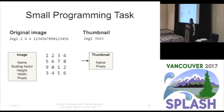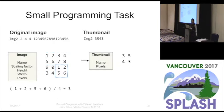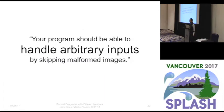The output contains the name and the list of pixels. To calculate this output, first determine the dimensions for the image — in this case, it's two rows and two columns. Then each pixel of the thumbnail is calculated by taking the average values of each of the corresponding areas. We gave this small programming task to participants and asked them to write a program that can handle arbitrary inputs by skipping malformed images.